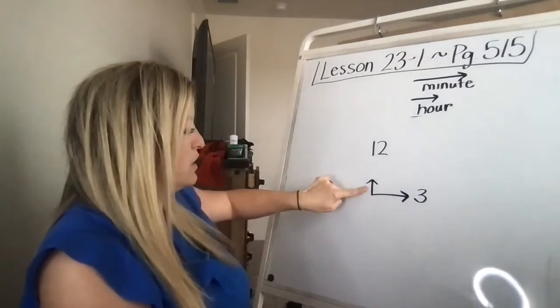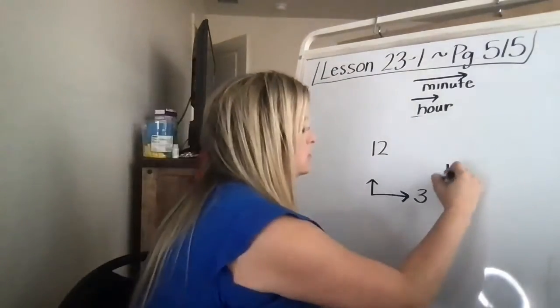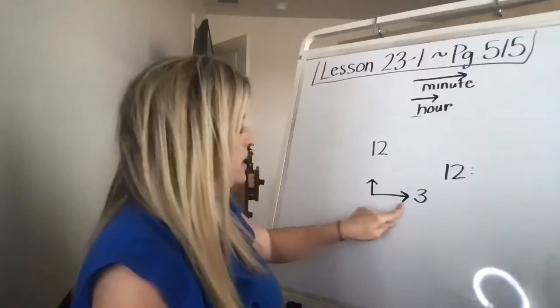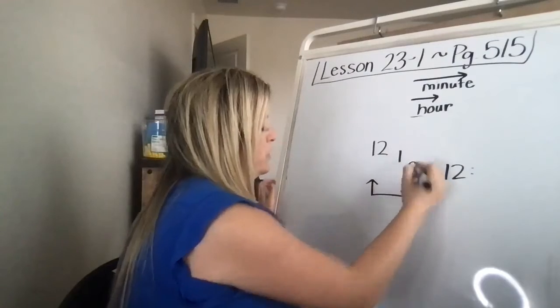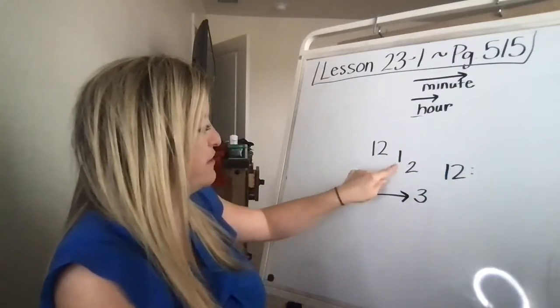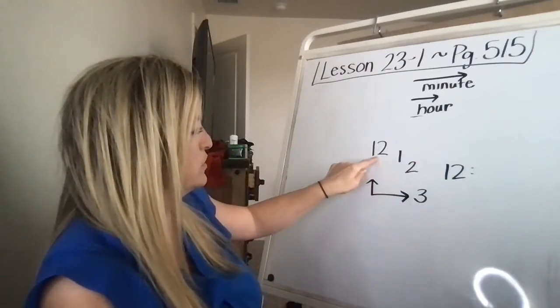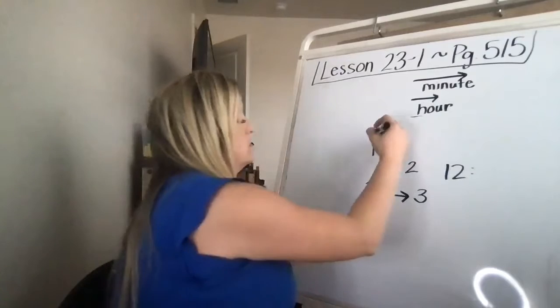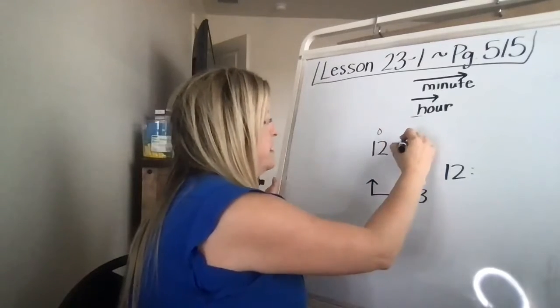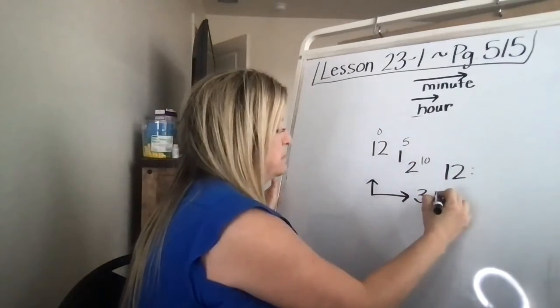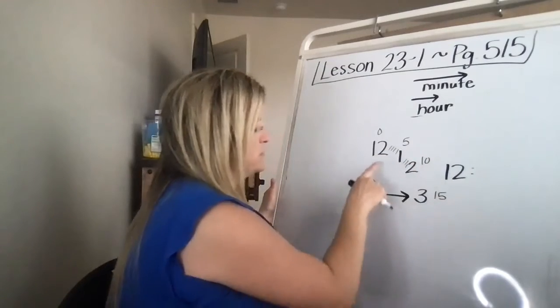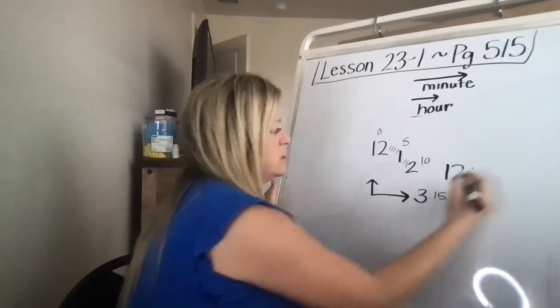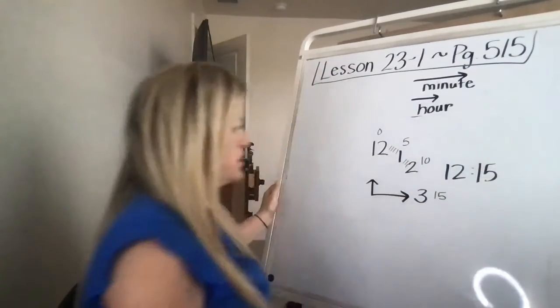Well, her hour hand is pointing to the 12. And her minute hand is pointing to the three. So when you get to the three, it's every five minutes. So it's 12, which is zero minutes. And then you have five minutes, 10 minutes, 15 minutes. In between, there's five jumps. So this is 5, 10, 15. So it is 12:15 right now.